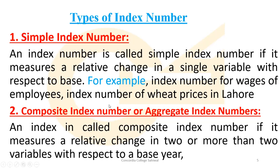Next, we have composite index number — also called aggregate index number. A composite index number measures changes in two or more variables with respect to a base year. The difference between the two types: a simple index measures changes in a single variable, while a composite index measures changes in two or more variables.